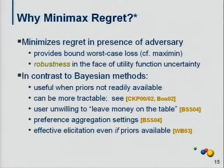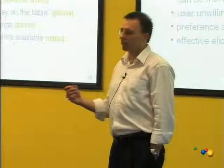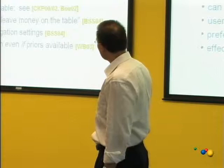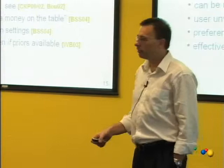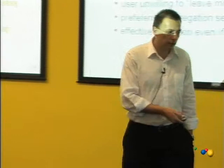Why use minimax regret as opposed to other criteria like maximin? Obviously we've got robustness in the face of uncertainty. If we're concerned about worst case loss, this is the right thing to do. One can say this is very cautious, but there are reasons why this is a much better approach than maximin. If one has priors, one could be Bayesian. But it turns out that even when we've got priors available, using minimax regret can be a very effective driver of preference solicitation. It's also much more tractable to do the reasoning with these strict uncertainty sets.